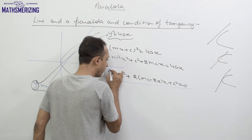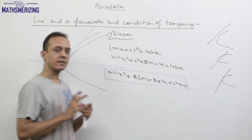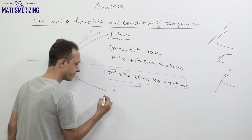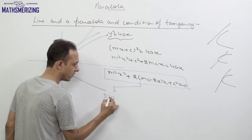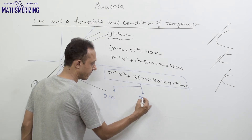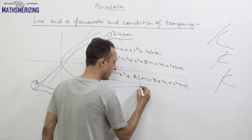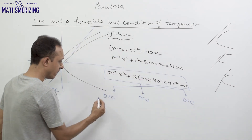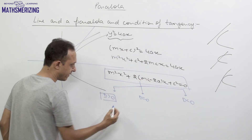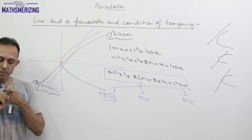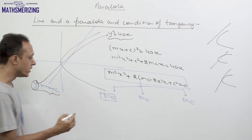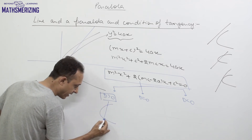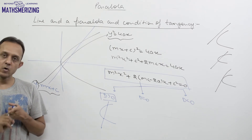For a quadratic equation there are three possibilities for its roots: two real roots, equal roots, or no real roots. When D > 0, we get two separate values of x, meaning the parabola and line intersect at two distinct points — in this case they intersect to form a chord.